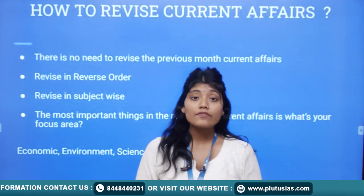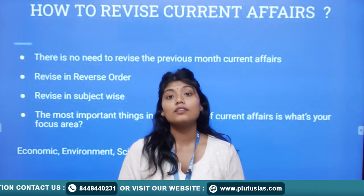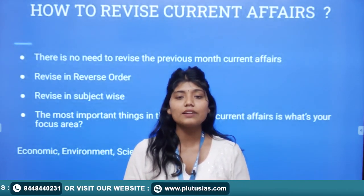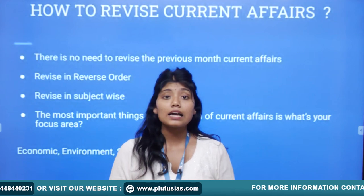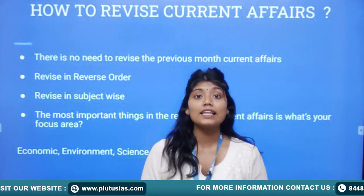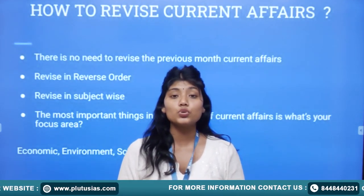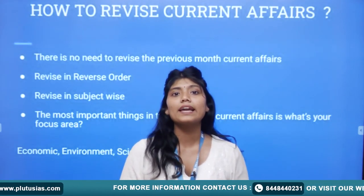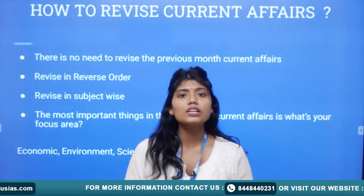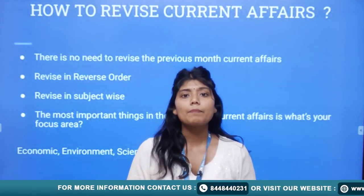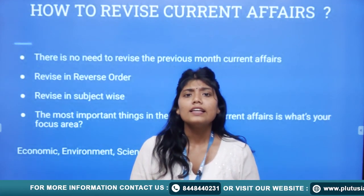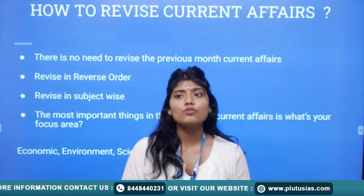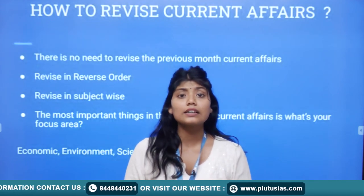Revise in reverse order. That means if you are starting from July, then July, June, May — you will study this way. And in the last one year, you can revise the current affairs three times, revising it for a quarter of a year at a time.